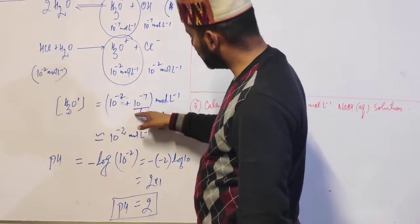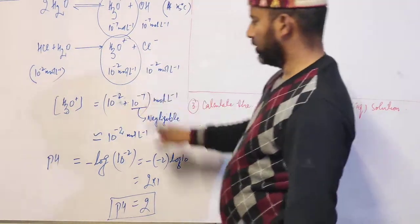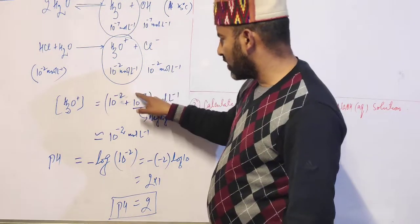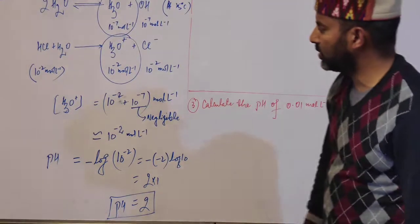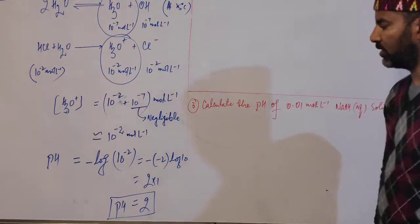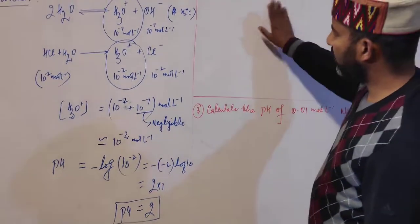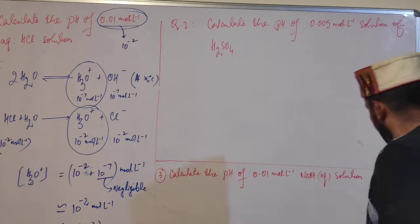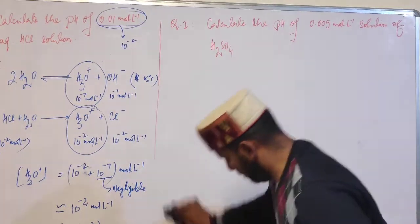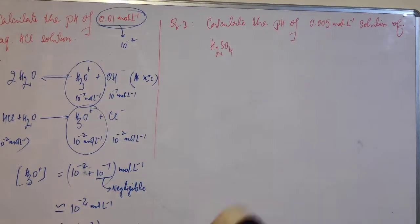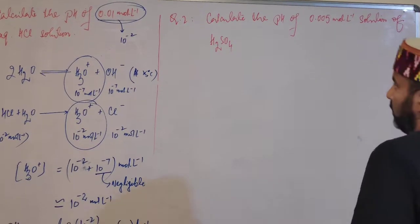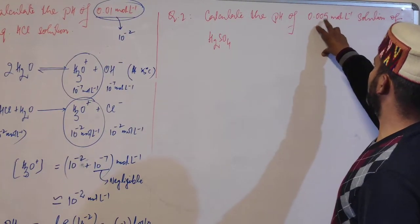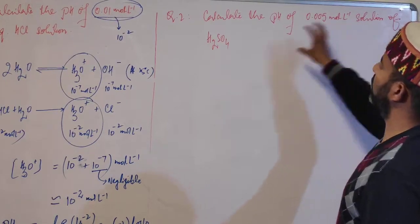This value of 10⁻⁷ is ignored because it is very small compared to the given concentration of the acid. Now let's calculate the pH of a 0.005 mol/L solution of sulfuric acid.